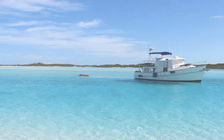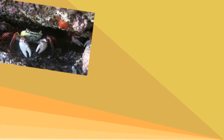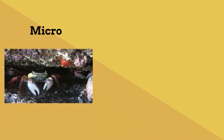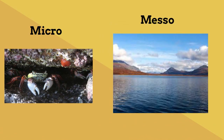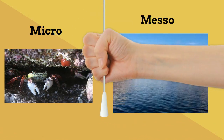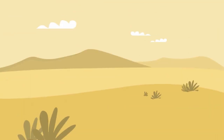A small ecosystem, like this area under a rock, is a micro ecosystem. A medium sized ecosystem, like a large lake, is a meso ecosystem. And a biome is a large ecosystem.